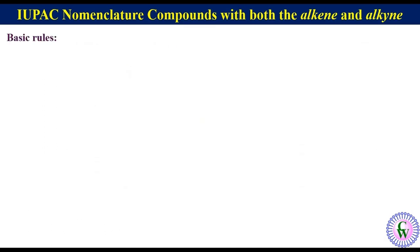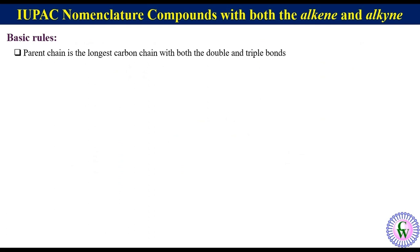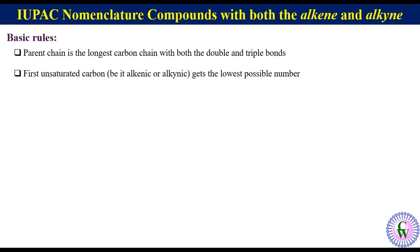There are certain basic rules which we should keep in mind while naming such compounds. The parent chain is the longest carbon chain with both the double and triple bonds. Numbering starts from the end giving the lowest possible number to the unsaturated carbon, and it doesn't matter whether it is alkene or alkyne.